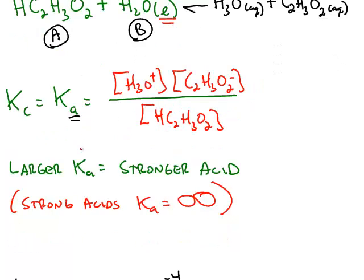The larger this equilibrium constant is, the stronger the acid is. And if the acid had been a strong acid, like hydrochloric, the Ka is infinitely large.